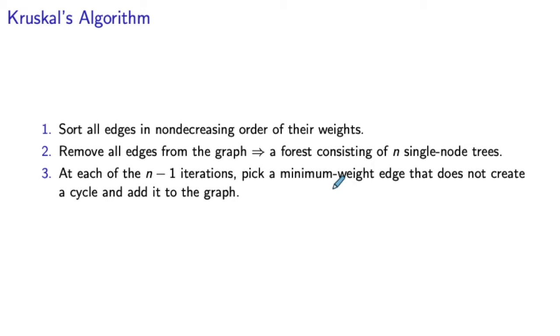So when we add an edge, the number of trees in our forest is going to decrease by one at every iteration, and as a result, after n minus one iterations, we will have just a single tree.